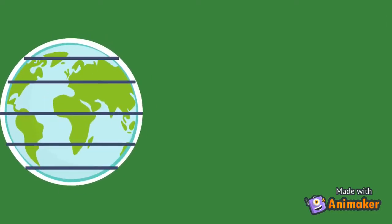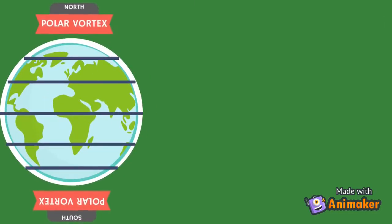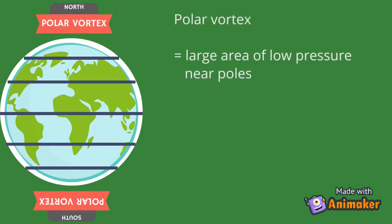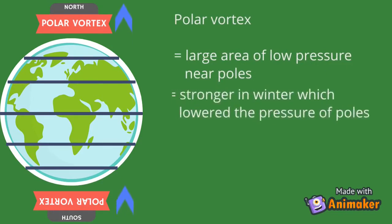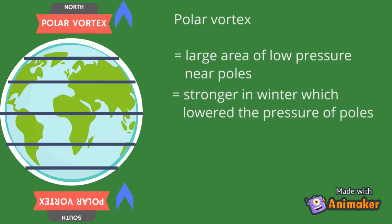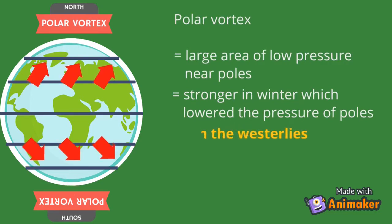Near the poles, there is existence of a polar vortex, which is a large area of low pressure. The polar vortex strengthens in winter, which lowers the pressure of the poles, so the Westerlies grow stronger.